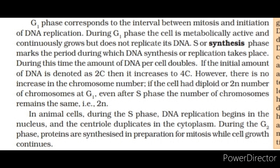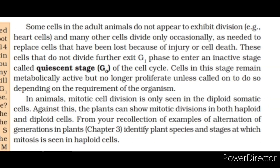In animal cells, during the S phase, DNA replication begins in the nucleus and the centriole duplicates in the cytoplasm. During the G2 phase, proteins are synthesized in preparation for mitosis while cell growth continues. Some cells in adult animals do not appear to exhibit division — e.g., heart cells — and many other cells divide only occasionally as needed to replace cells that have been lost because of injury or cell death. These cells that do not divide further exit G1 phase to enter an inactive stage called quiescent stage, G0, of the cell cycle. Cells in this stage remain metabolically active but no longer proliferate unless called on to do so depending on the requirement of the organism.